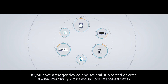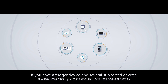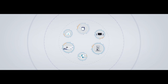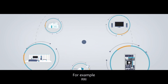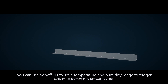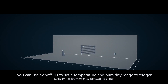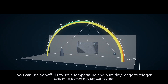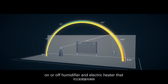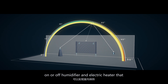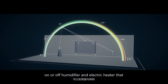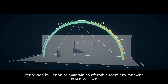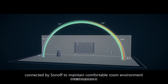You can set different smart scenes if you have a trigger device and several supported devices. For example, you can use SONOFF TH to set a temperature and humidity range to trigger on or off a humidifier and electric heater connected by SONOFF, to maintain a comfortable room environment.